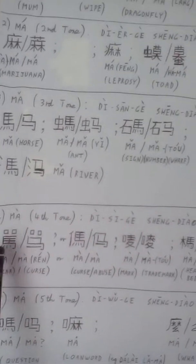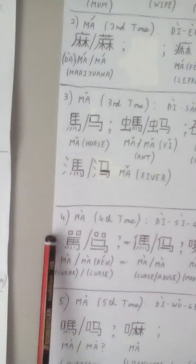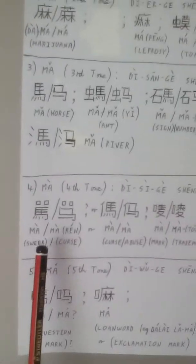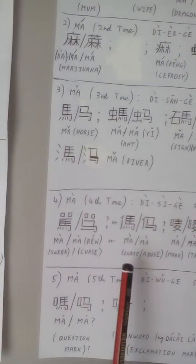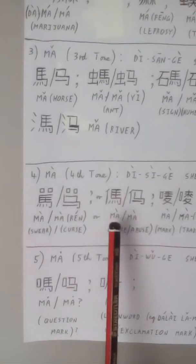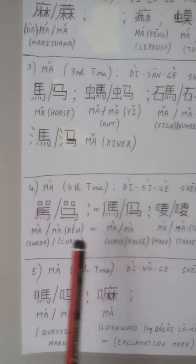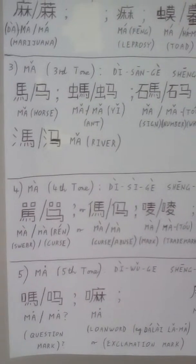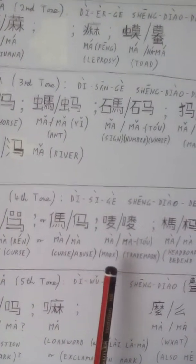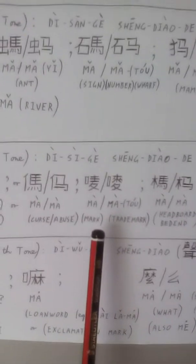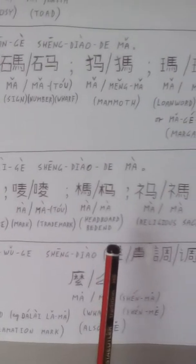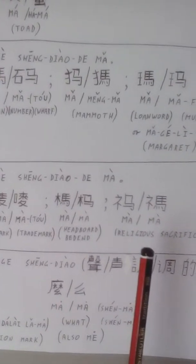第四个声调的马, the fourth tone 马, can be 骂人, which is to swear or curse someone. And this 骂 can be also written this way, which I was telling you in Lesson 3, the same word written differently. 商标, or 马头, is a trademark. 马 can be a headboard or bed end. 马 can be a religious sacrifice.